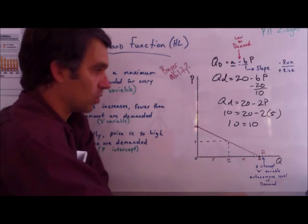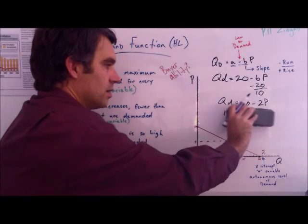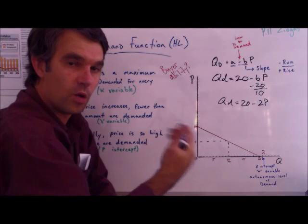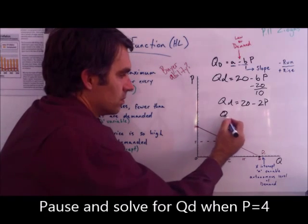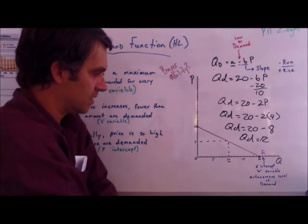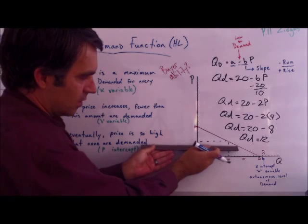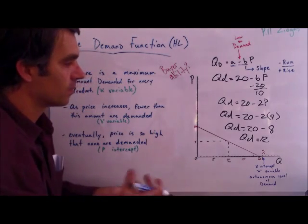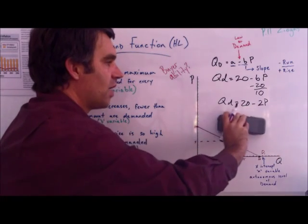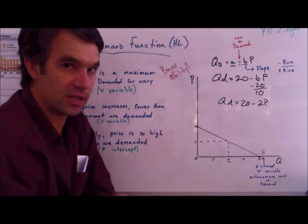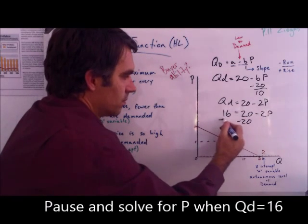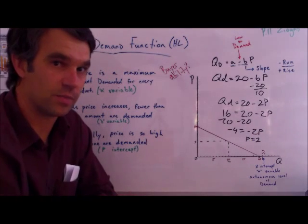If we didn't know one of those values, we could solve for it. For example, if I set the price at 4, quantity demanded would be QD equals 20 minus 2 times 4, which gives 12 — and we can see that point on the graph comes straight down to 12. I could also ask: if I want to sell 16 units, what should the price be? Plugging in, we find that price has to equal 2.